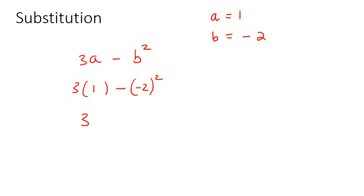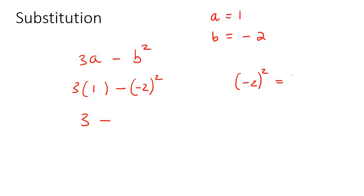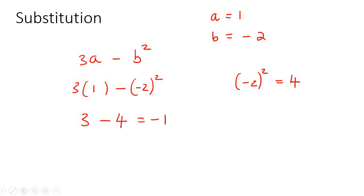So 3 times 1 is 3. And then here there's a minus, so just say minus. And then minus 2 to the power of 2. If you type that on your calculator, remember to use the brackets — it's very important. That'll give you positive 4. If you're getting negative 4, it's because you're not using a bracket. So you're going to have 3 minus 4, which is then equal to negative 1. For this lesson, we're just going to practice a lot of these.